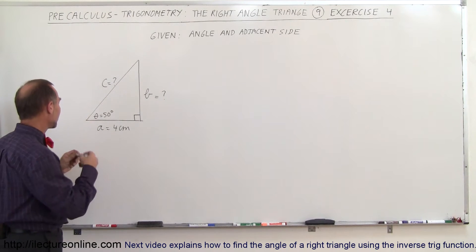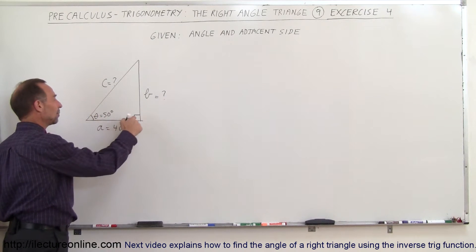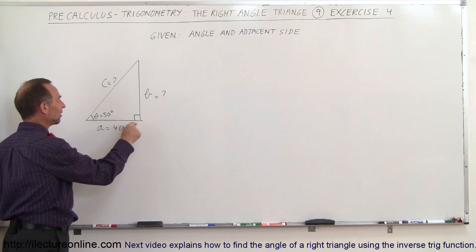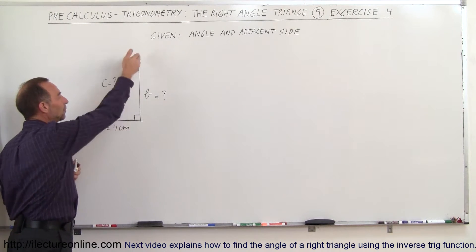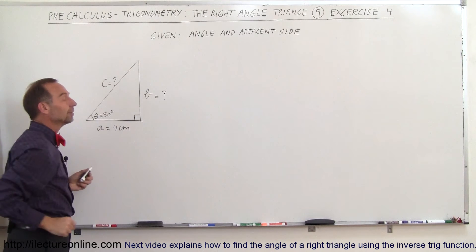So here we have the angle theta right here and there's my angle symbol. Here's my right angle and so this here becomes the adjacent side, this becomes the opposite side and this is my hypotenuse.